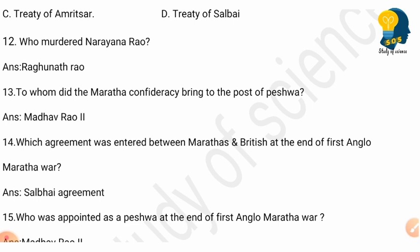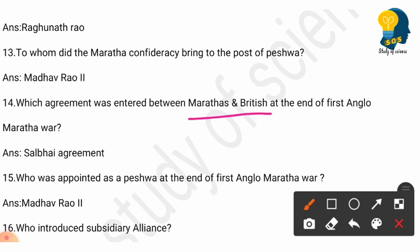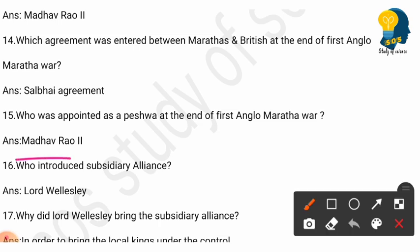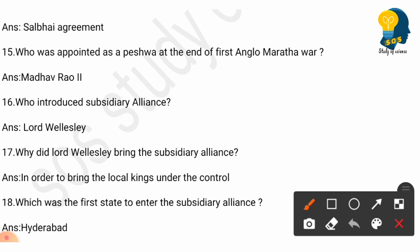Question 14: Which agreement was entered between the Marathas and the British at the end of the First Anglo-Maratha War? Answer: The Salbai Agreement. Question 15: Who was appointed as Peshwa at the end of the First Anglo-Maratha War? Answer: Madhav Rao Second.